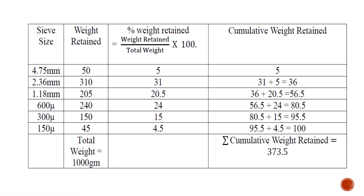Here the actual solution starts — first I draw two columns of Sieve Size and Weight Retain. In this example the total weight is given, but in some examples the total weight is not given and you have to calculate it yourself. Total weight is the addition of all weight retains: 50 + 310 + 205 + 240 + 150 + 45 = 1000 grams. This total weight and weight retain are used in the calculation of percentage weight retain.